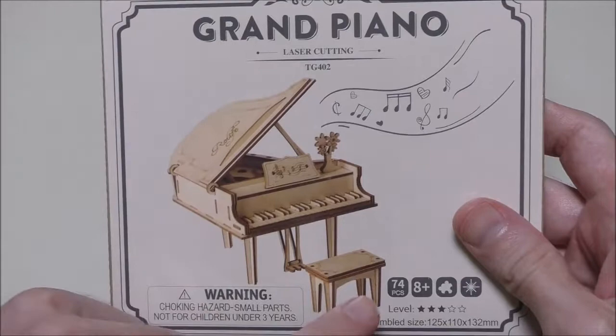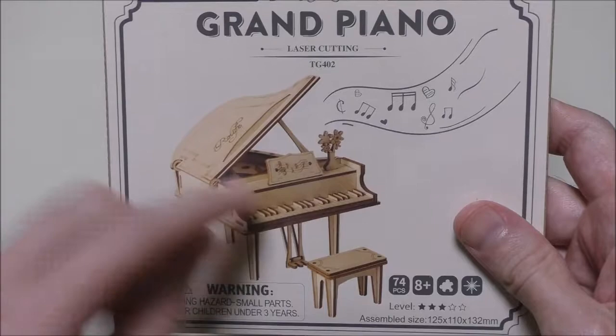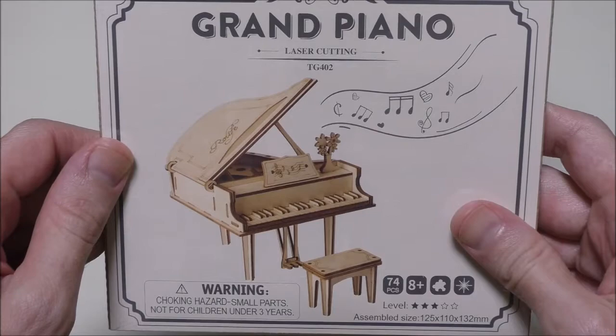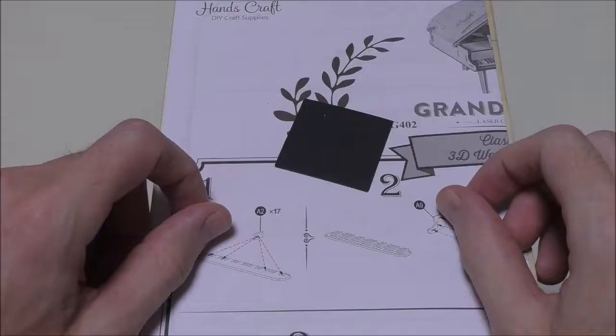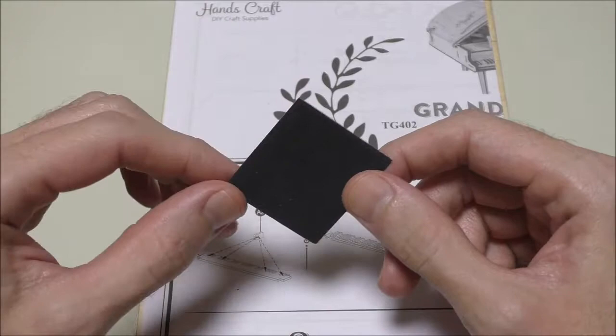Now this one is significantly fewer pieces than the merry-go-round we did last time, but I do quite like this design and I'm interested to see how easy this is to make. So as always we're gonna open the box and find out what we have inside. We have the complimentary piece of sandpaper that can be used to sand down any pieces of wood that we don't need.